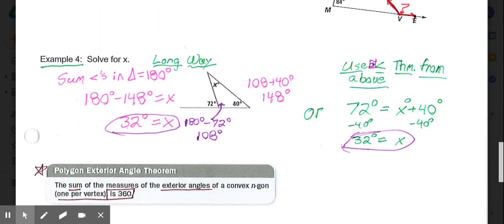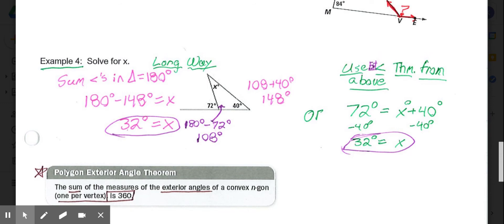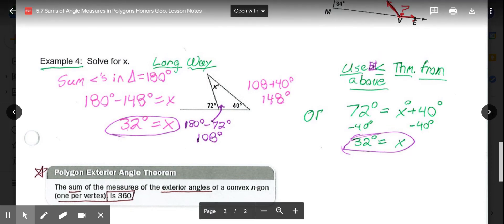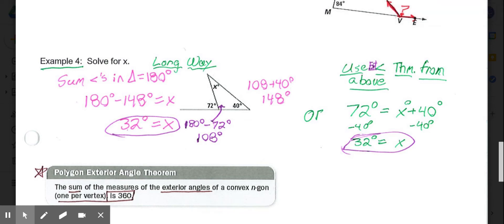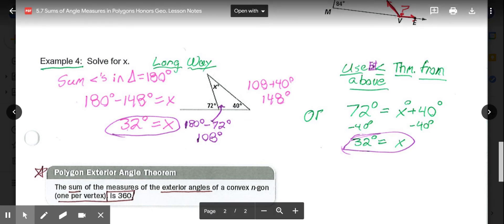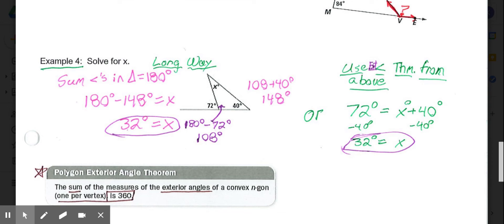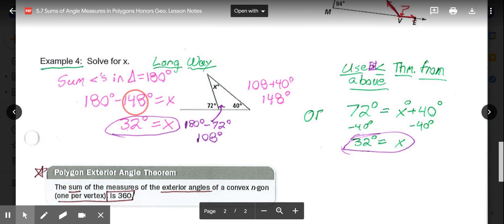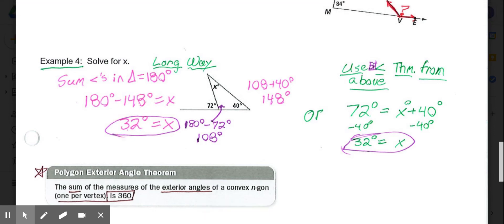And then we have example 4, which there is a way we could do this the long way, or with the theorem from above. If we were given this diagram and we didn't use the theorem from above, we know all triangles are 180, and we know linear pairs are 180. What I could do is, I could do 72 taken away from 180, giving me 108 for this angle here. Then, 108 plus the 40 gave me 148, and 180 minus the 148 tells me X is 32.